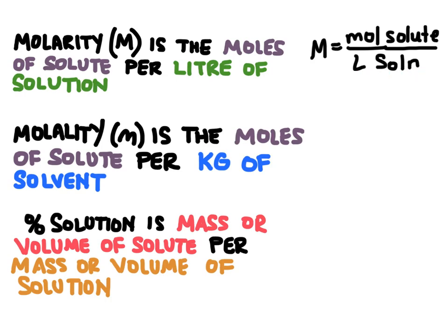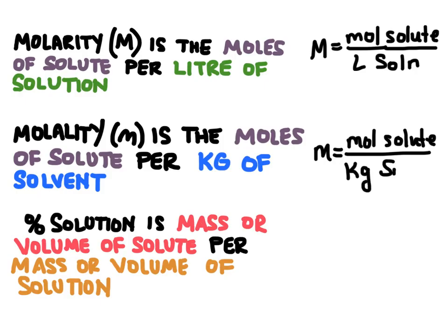Next is molality — these two often get confused because the names are so similar. We use a lowercase italicized m, and this is the moles of solute per kilogram of solvent. As an equation, moles of solute on top, but the bottom changes to kilograms of solvent — not kilograms of the solution. For molarity we use the whole solution, solute and solvent together, whereas for molality we're only concerned with how much the solvent weighs.